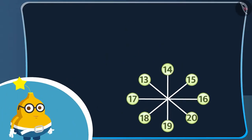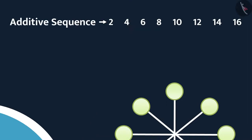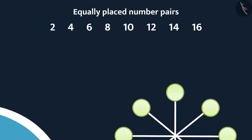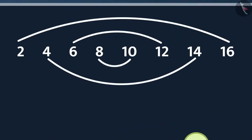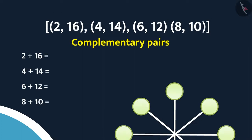Now see here, this is an additive sequence of 8 numbers. Here, these are the equally placed number pairs. So, these are the complementary pairs. And see, their sum is also equal.